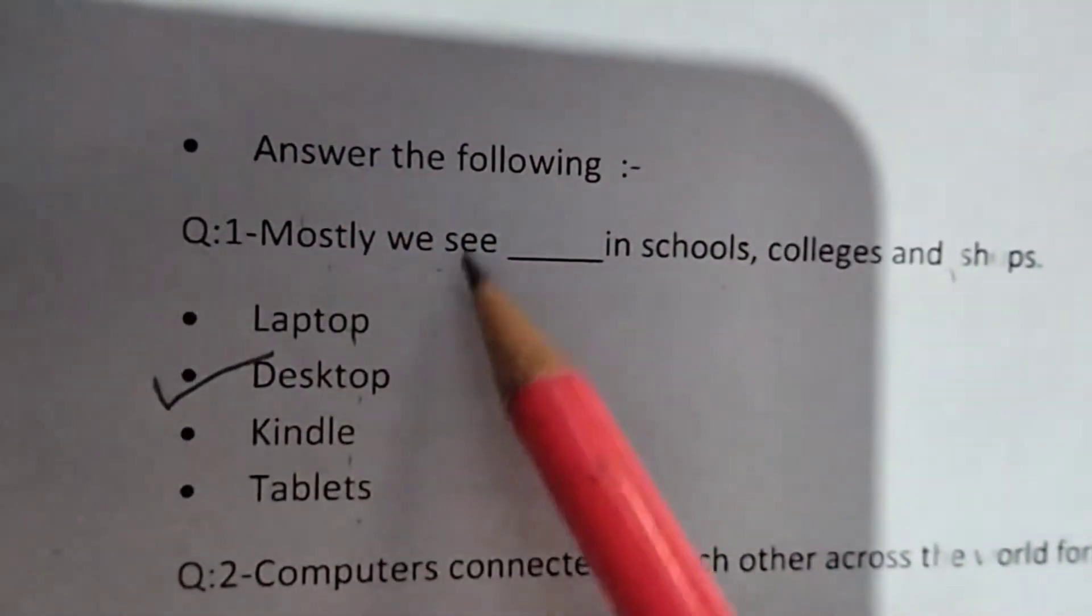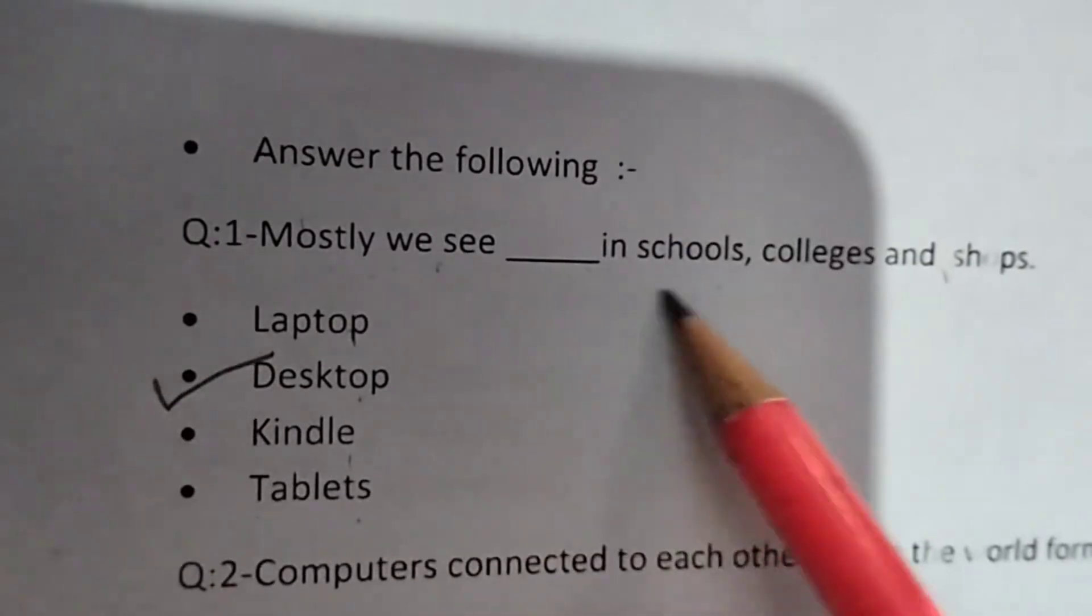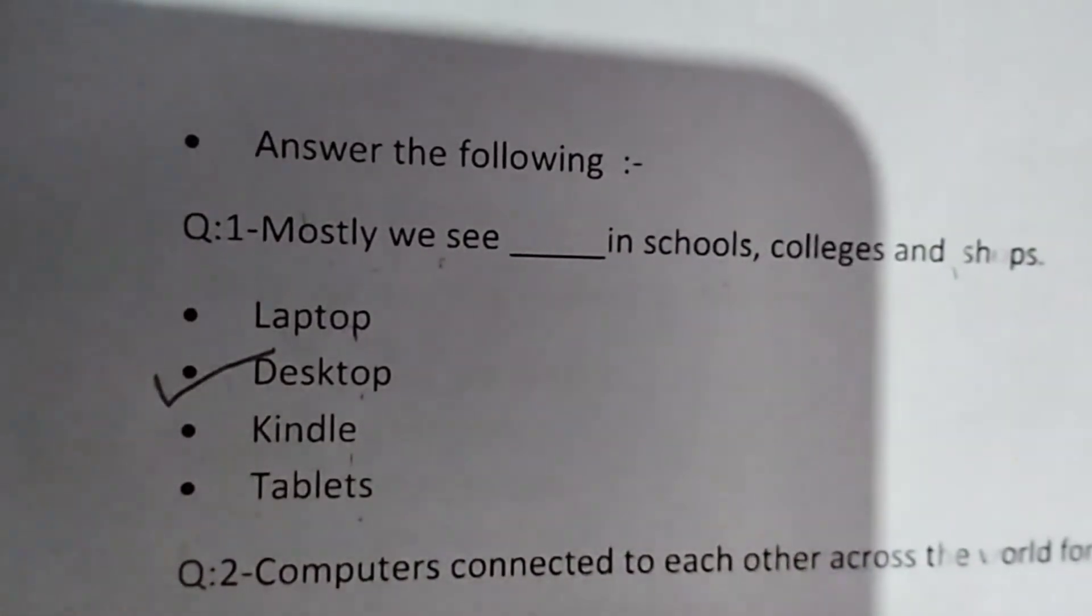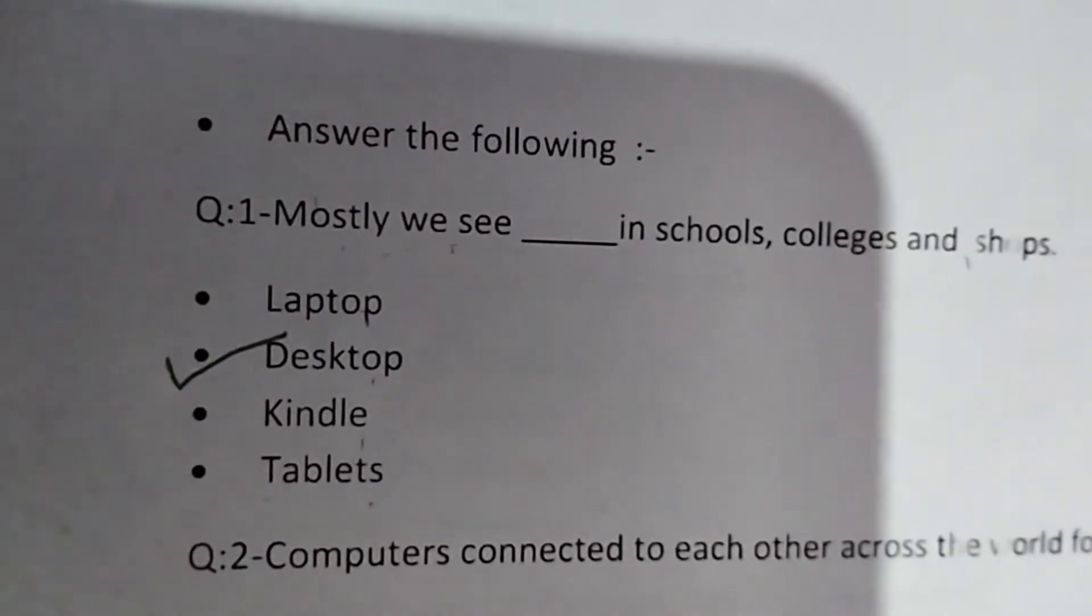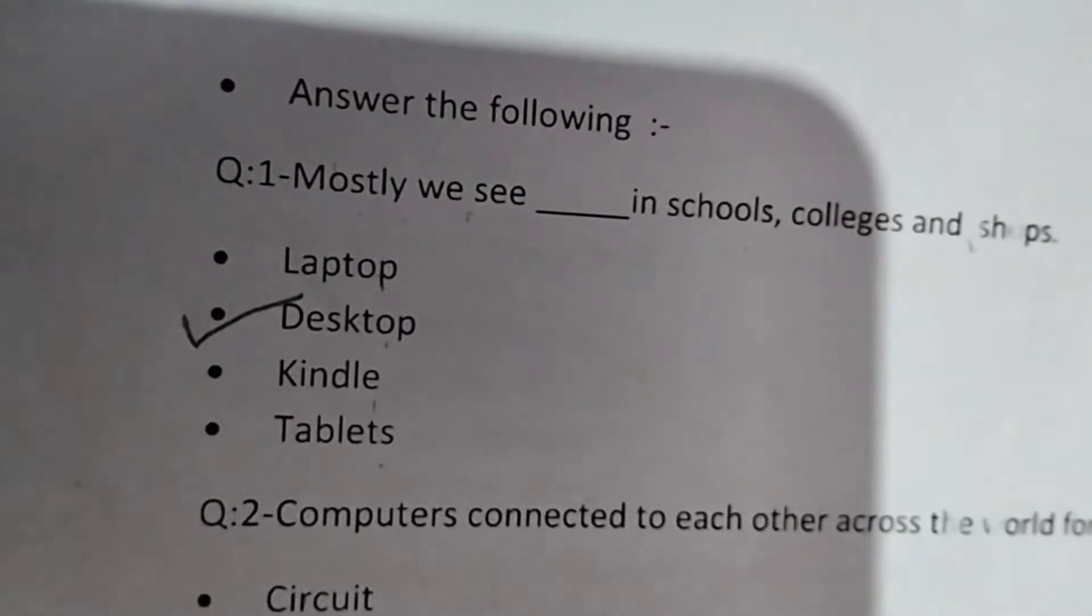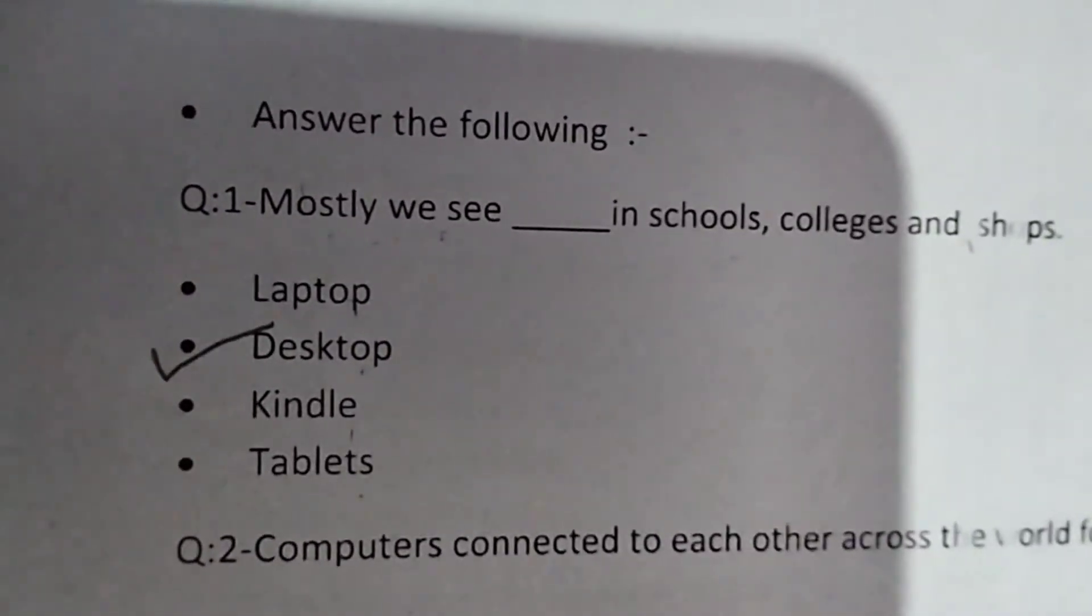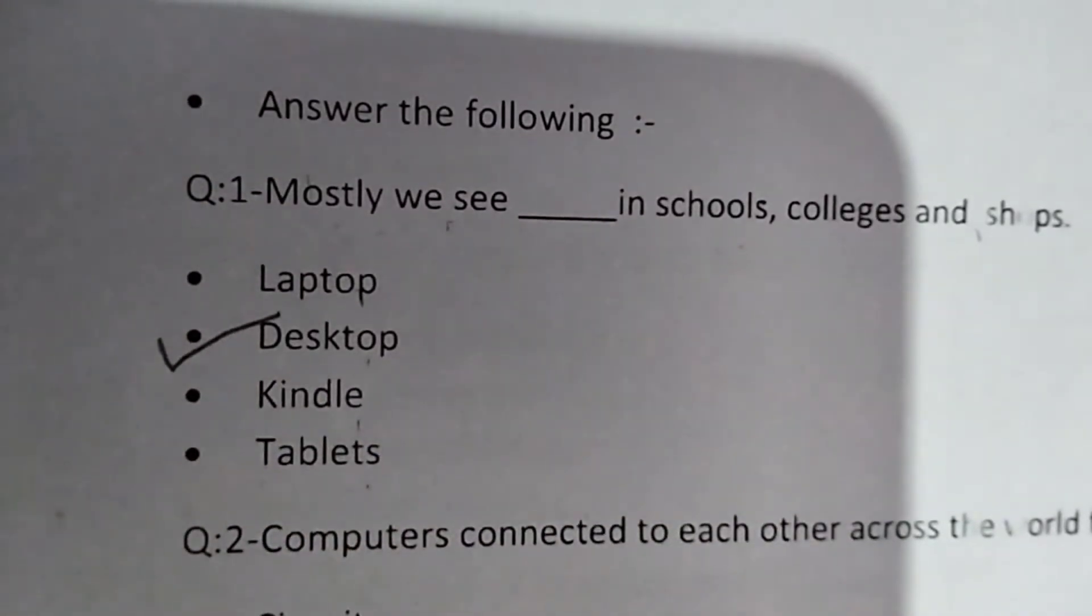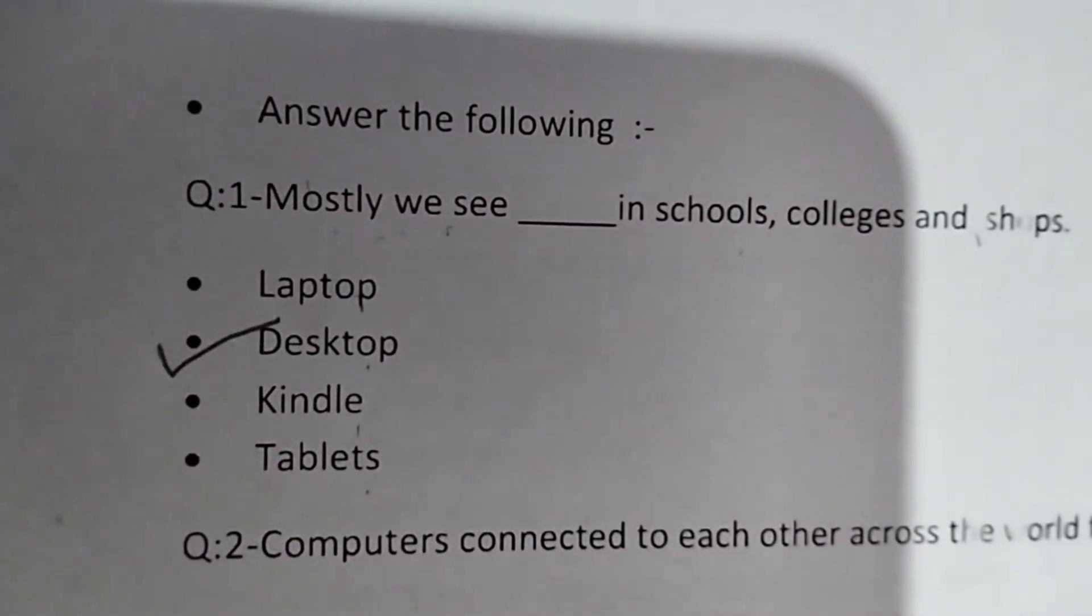Question number 1 is: Mostly we see blank in schools, colleges and shops. What do you see in schools, colleges and shops? Laptop, desktop, Kindles, and tablets. So what do you see in schools? Desktop. So you have to tick the correct answer, desktop.